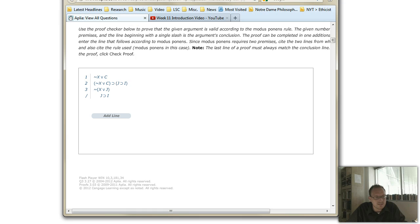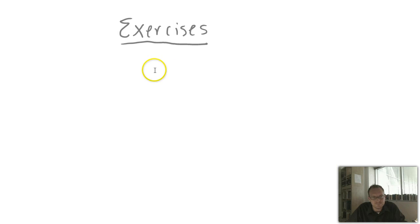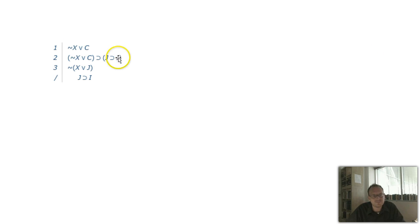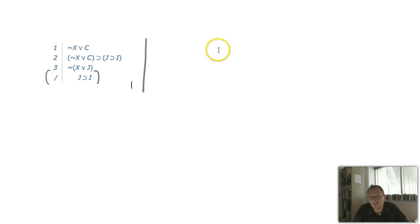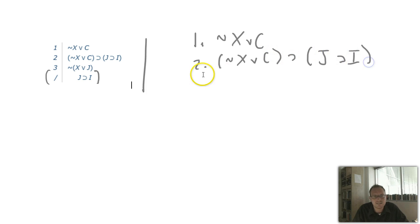So let me pull up the Aplia system. Here's Aplia — I have all the problems here and I'm just going to go through and do these problems with you. Let's take a screenshot of this. Here's the first problem. Let's write it out: not X or C, then J then I. Third line: not X or J. Conclusion: J then I.